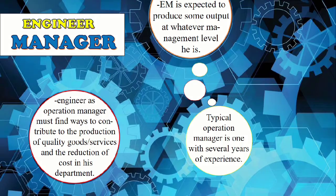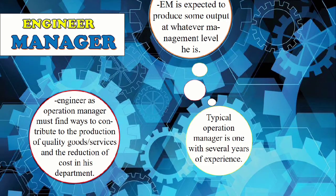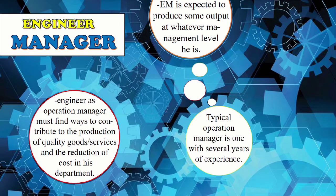Operations and the Engineer Manager: The engineer as operation manager must find ways to contribute to the production of quality goods or services and the reduction of cost in his department. The engineer manager is expected to produce some output at whatever management level he is. For example, if the engineer manager is assigned as manufacturing engineer, his function is to determine and define the equipment, tools, and processes required to convert the design of a desired product into reality in an efficient manner. A typical operation manager is one with several years of experience.